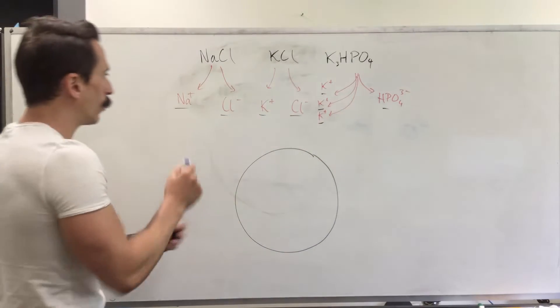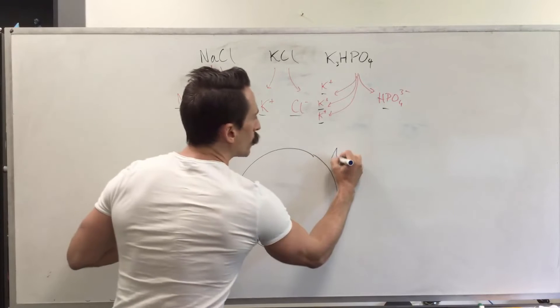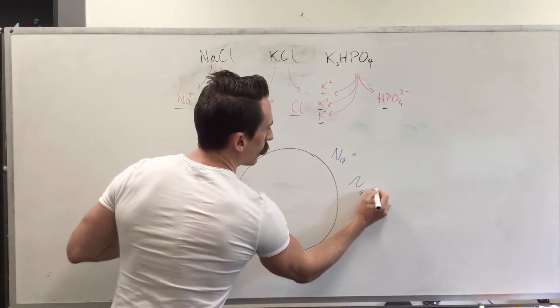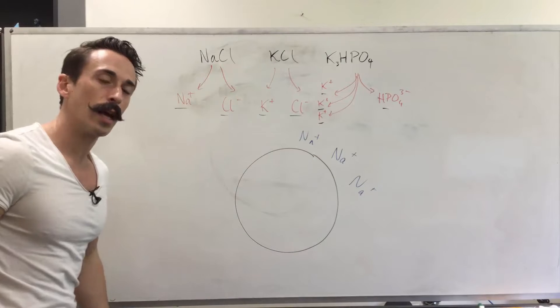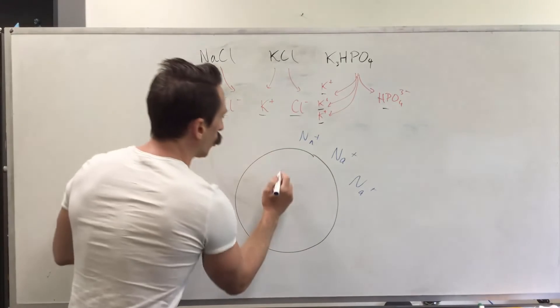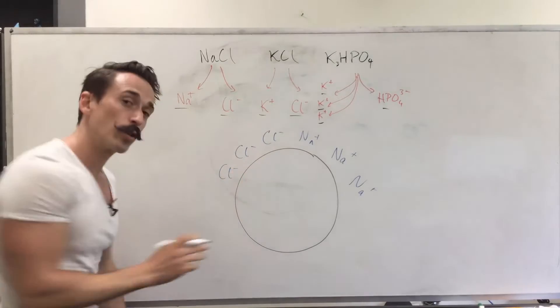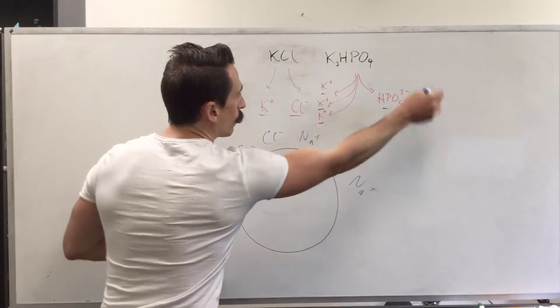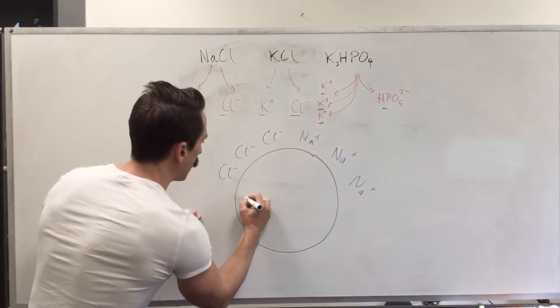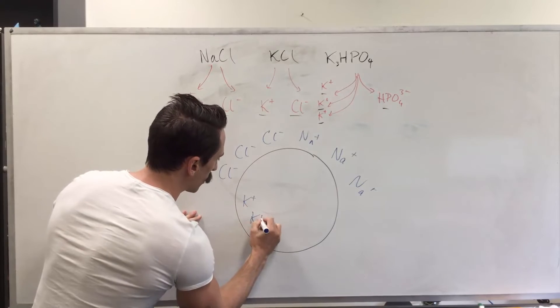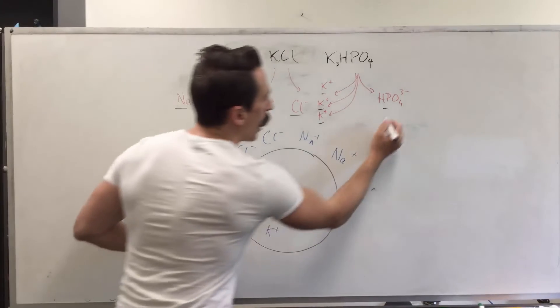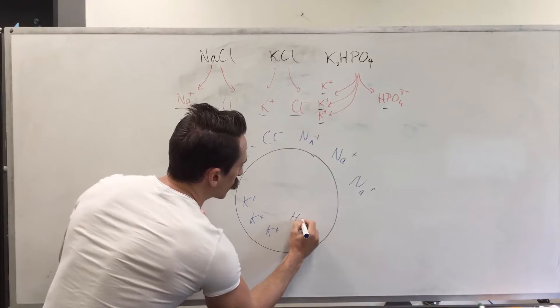For example, when we look at sodium, most of the sodium is sitting outside the cell—it's an extracellular cation. Most of the chloride is also sitting outside the cell—that's called an extracellular anion. Most of the potassium is sitting inside the cell—that's an intracellular cation—and most of the phosphate is sitting inside the cell as well. That's called an intracellular anion.